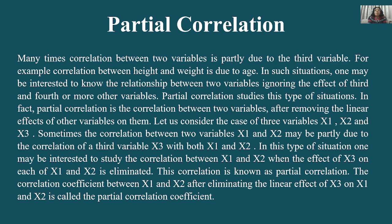Partial correlation studies this type of situation. In partial correlation, we study situations where the correlation between two variables is partly due to a third variable, and we want to see what their relationship is after nullifying that third variable's effect. In fact, partial correlation is the correlation between two variables after removing the linear effect of other variables on them.